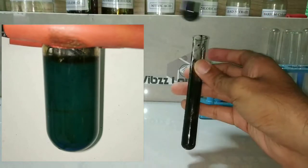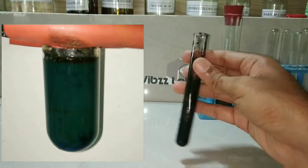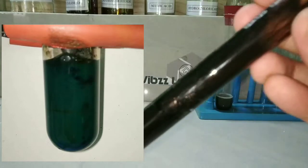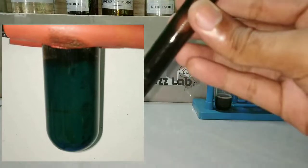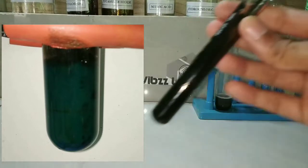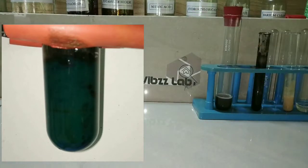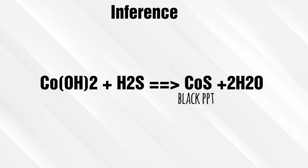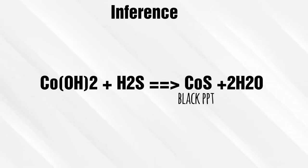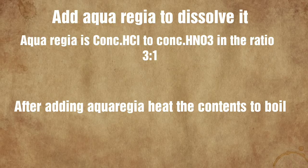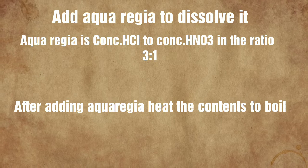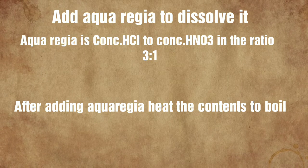The black precipitate formed on passing hydrogen sulfide gas is given by both nickel salts and cobalt salts, so we have to differentiate between these two. The cobalt hydroxide formed by reaction with ammonia reacts with hydrogen sulfide, giving cobalt sulfide, which is the black precipitate.